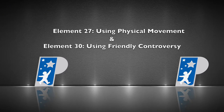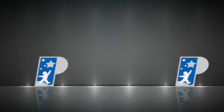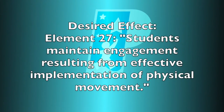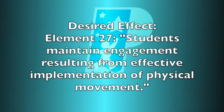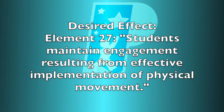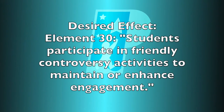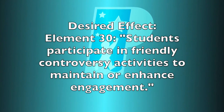Element 27 is using physical movement. Element 30 is using friendly controversy. The desired effect of Element 27 is that students maintain engagement resulting from effective implementation of physical movement. The desired effect of Element 30 is that students participate in friendly controversy activities to maintain or enhance engagement.